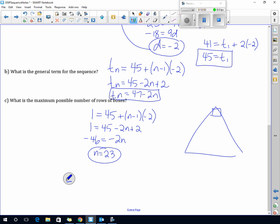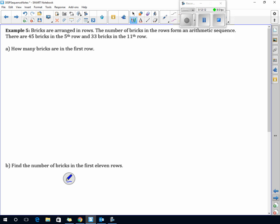Example 5. Bricks are arranged in a row. The number of bricks form an arithmetic sequence. 45 bricks in the fifth row, so T5 is 45, and 33 bricks in the 11th row, so T11 is 33. How many bricks in the first row? Well, this is exactly like we just did. What do we do? We rename the first term. And if this went down by 4, then we have to go down by 4. So this is now T7.